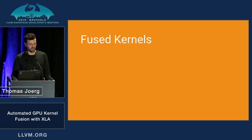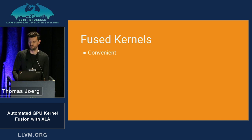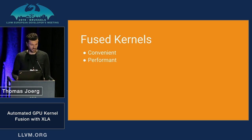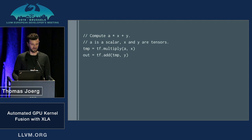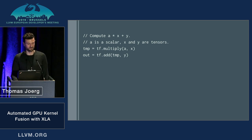Fused kernels are very commonly used by TensorFlow and have a few advantages. They're convenient to use — rather than having to remember how batch normalization is implemented internally, you just use one op. But they are also very important for performance because they run much faster than a combination of basic operations. For example, imagine you wanted to multiply a tensor with a scalar and add it to another tensor. You could do it like this in TensorFlow: just use a tf.multiply and tf.add op.